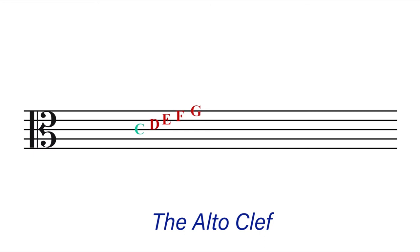Going downwards from C: the second space will be B, the second line is A, the first space will be G, and the first line is F. When the names of the lines and spaces are separated, the lines are F, A, C, E, G, and the spaces are G, B, D, F.